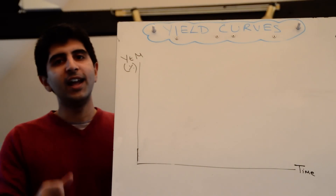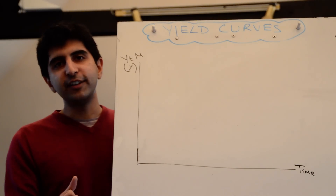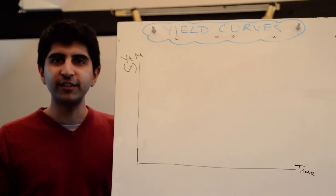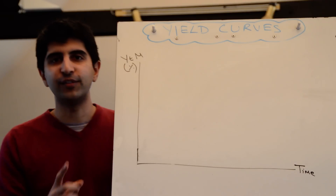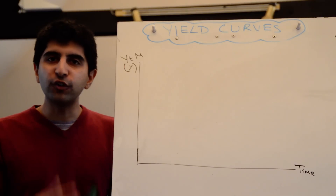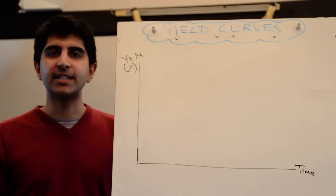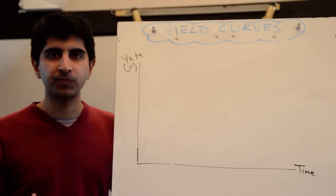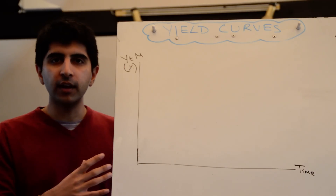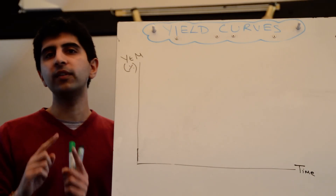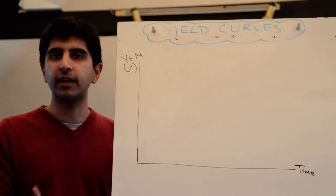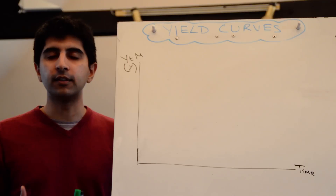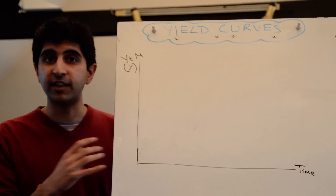Hi everybody! Politicians, investors, economists tend to analyse yield curves as a forward-looking indicator to the health and status of an economy. Before I start this video, it's important that you've watched my previous video on government bonds, borrowing and yields to understand the theory in this.